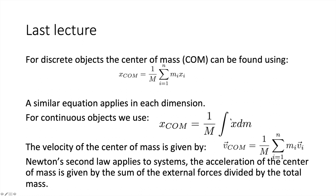The velocity of the centre of mass is given by 1 over m times the sum of the masses multiplied by the velocities of each of the particles. Newton's second law also applies to systems: the acceleration of the centre of mass is given by the sum of external forces divided by the total mass. So if there are no external forces, the acceleration of the centre of mass is zero.